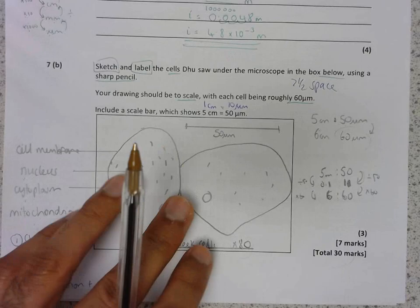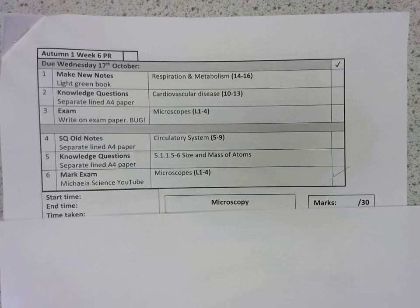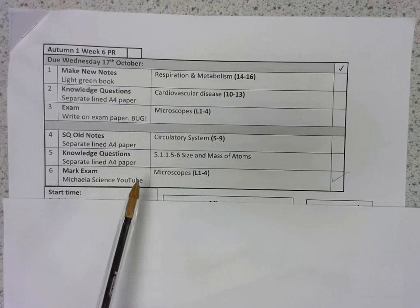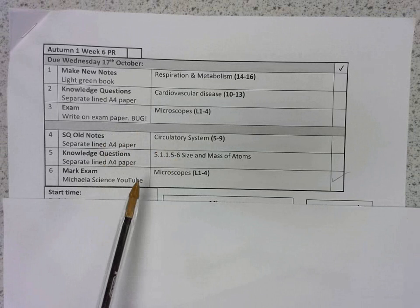Add up your marks out of 30, and put your marks at the front of your sheet. Remember, in addition to marking the exam, you need to make sure that you self-quiz on your notes on the circulatory system, and that you complete the knowledge questions on size and mass of atoms as part of your normal homework, but you'll also have holiday homework, which will be due back on the first day as well.